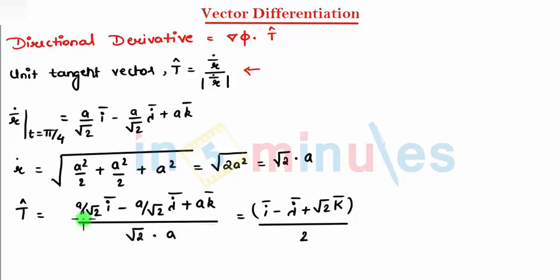a gets canceled, when you took √2 common that becomes 2, and this is your t cap at t equal to π/4. I got t cap. Now I can put in this equation, that means I need to find directional derivative.